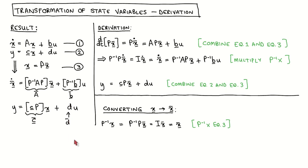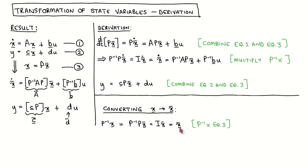We end this page with a remark. The transformation equation gives us a way to convert a set of new states X̄ to a set of old states X. If we rather want to convert the old states X to new states X̄ we can use the same idea used in the derivation. We take equation 3 and left multiply with the inverse of P. On the left hand side we have P⁻¹ times X. On the right hand side we have P⁻¹ times P times X̄, which is the identity matrix times X̄, which is simply X̄. We can therefore calculate X̄ by multiplying the inverse of the transformation matrix with X.